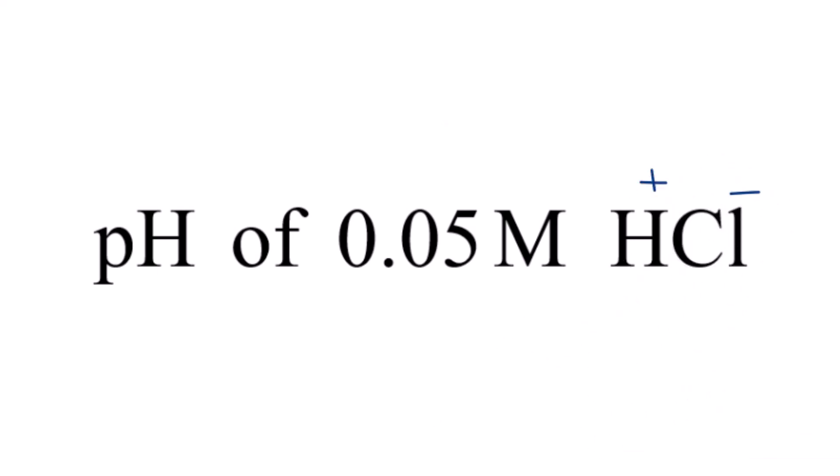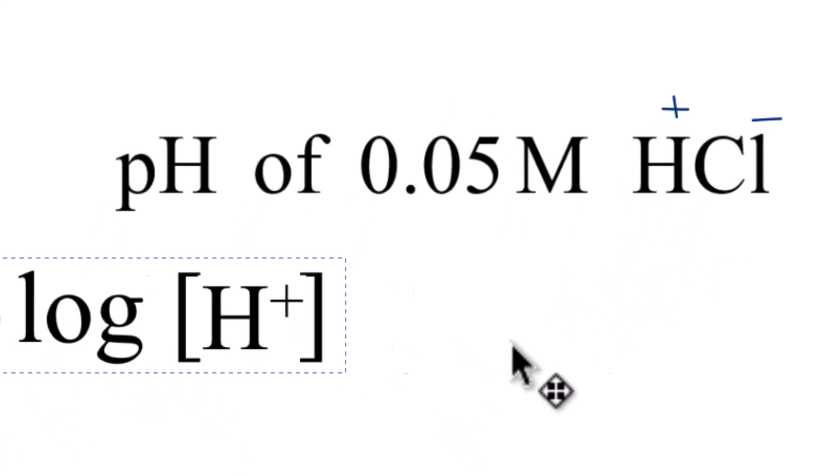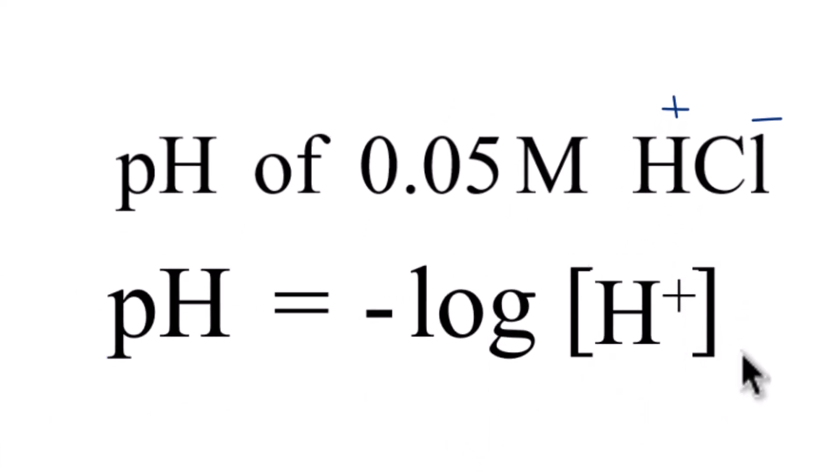So we have our H plus here, and we can use this equation. pH equals the negative log of the concentration of H plus. And we know that concentration is 0.05.